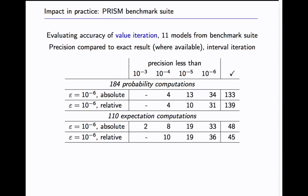If you don't have it, with the result of the interval iteration. As you can see here with an epsilon of 10 to the power of minus 6, you would expect to get a precision of 6 digits. But for several models you get less. But it's not that catastrophic as for the artificial model. For expectation it gets worse.